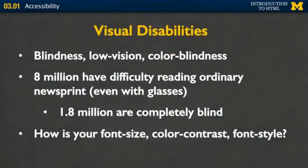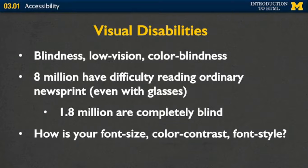When you talk about accessibility, almost everyone thinks about screen readers. They design and say they're going to make sure their page will read well on a screen reader. However, it's much more than that. While 1.8 million people are completely blind, we also have 8 million people who have difficulty reading ordinary newsprint, even with their glasses on. So one of the things to think about when designing is more than just font size — we also need to think about color contrast and different font styles. Can someone really see your page as easily as possible?